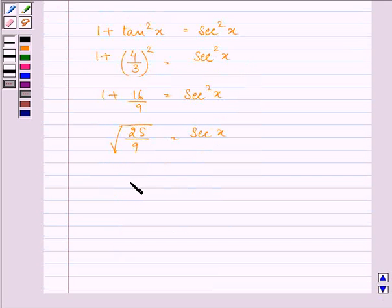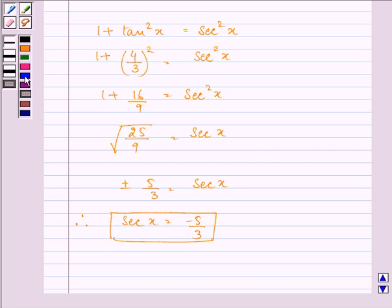That gives us the value as plus minus 5 by 3 as sec x. As we know that the value of x lies in the third quadrant, that means sec x is equal to minus 5 by 3. Now we have got the value of sec x, so cos x will be 1 divided by sec x, that is minus 3 by 5.